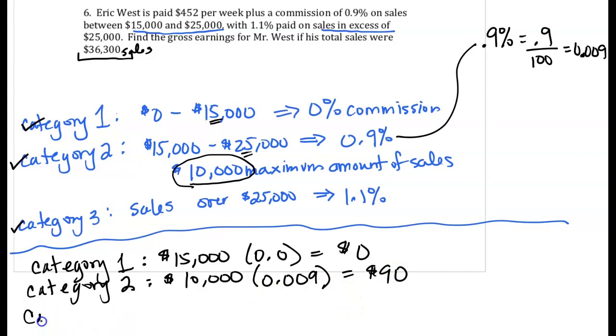In Category 3, here's where we have to figure out how much in sales fits in Category 3. So the sales over $25,000, if Eric tops out at $36,300 in sales minus the $25,000 from the previous categories, that's going to give us $11,300 in sales for Category 3.